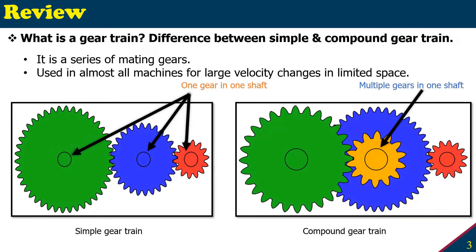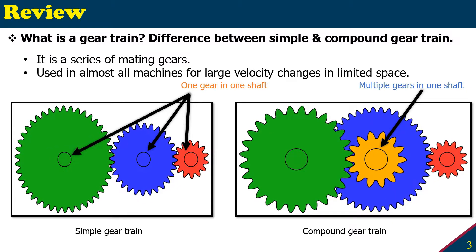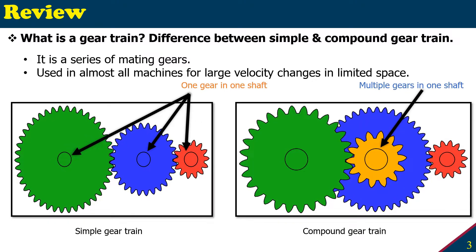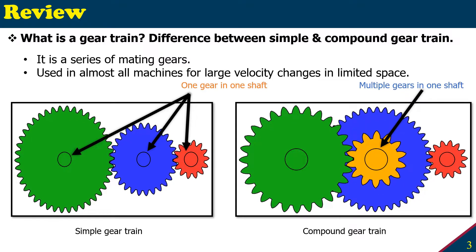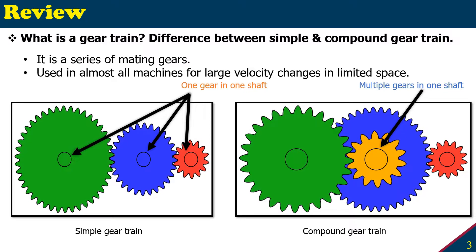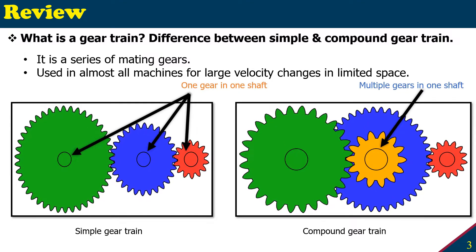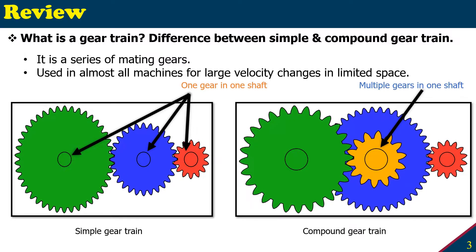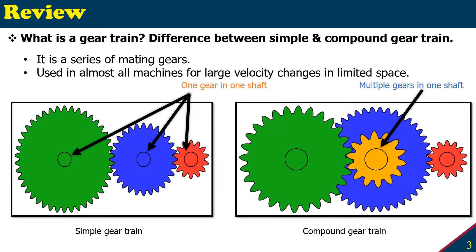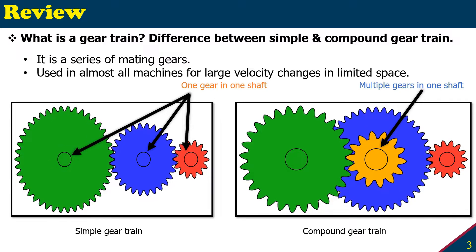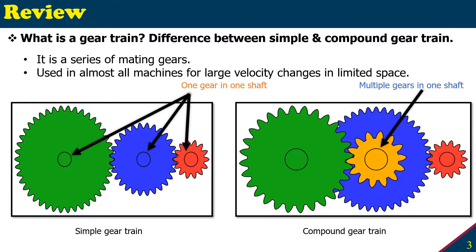What is a gear train? It is a series of meshing gears. If you see on the image on the left and the right, there are gears on shafts meeting with each other, and together they form a gear train. It is used in almost all machines for large velocity change in limited space. The gears have different sizes and different teeth, which gives them different rotational speeds, and that is how we change the velocity from one shaft to another.